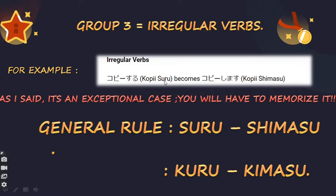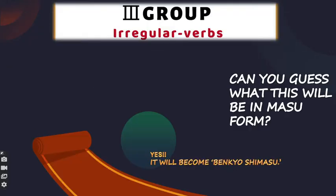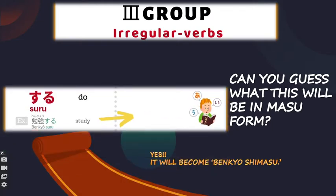'Kopii suru,' meaning 'to copy,' becomes 'kopii shimasu' in the polite form. Can you guess what 'benkyou suru' would be in the masu form? 'Benkyou suru' means 'to study.' In the polite form, suru becomes shimasu, so it will be 'benkyou shimasu.' I think you understood the group 3 verbs.